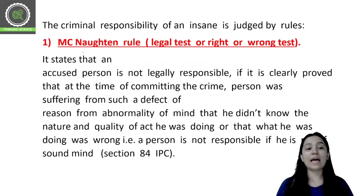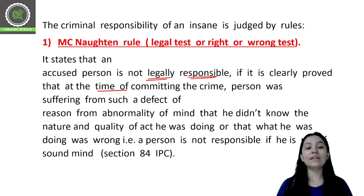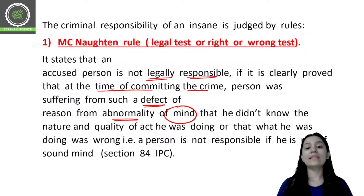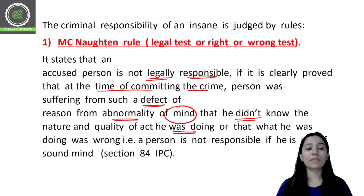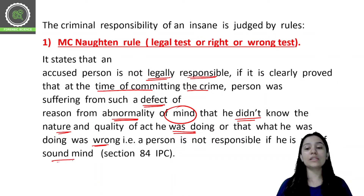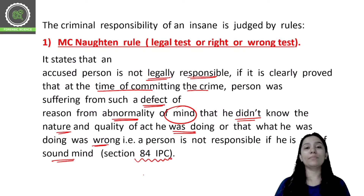McNaughton's rule states that an accused person is not legally responsible if it is clearly proved that at the time of committing the crime, the person was suffering from such a defect of reason or abnormality of the mind that they did not know the nature and quality of the act they were doing, or that what they were doing was wrong. A person is not responsible for their act because of unsoundness of mind. This comes under Section 84 of the IPC.